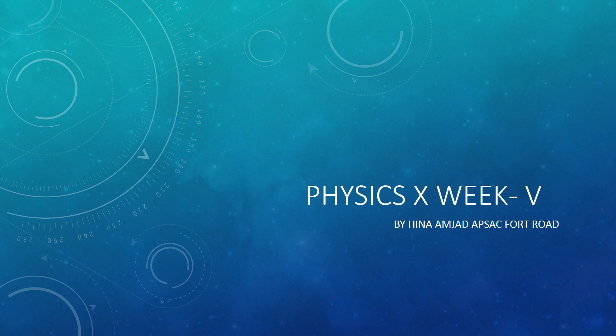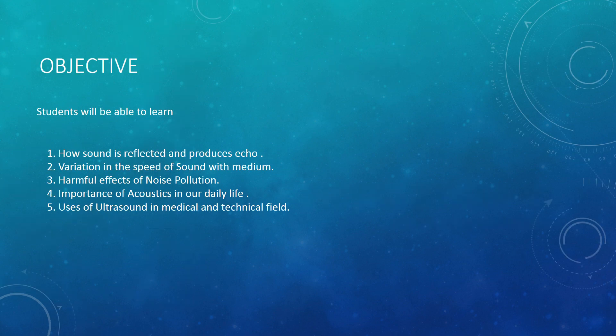Let's start our topics. The objectives of this week are: first, students will learn how sound is reflected and produces echo — how reflection takes place; second, the variation in the speed of sound with media — how speed of sound varies with solids, liquids and gases; third, the harmful effects of noise pollution; fourth, the importance of acoustics in our daily life; and fifth, the uses of ultrasound in medical and technical fields.